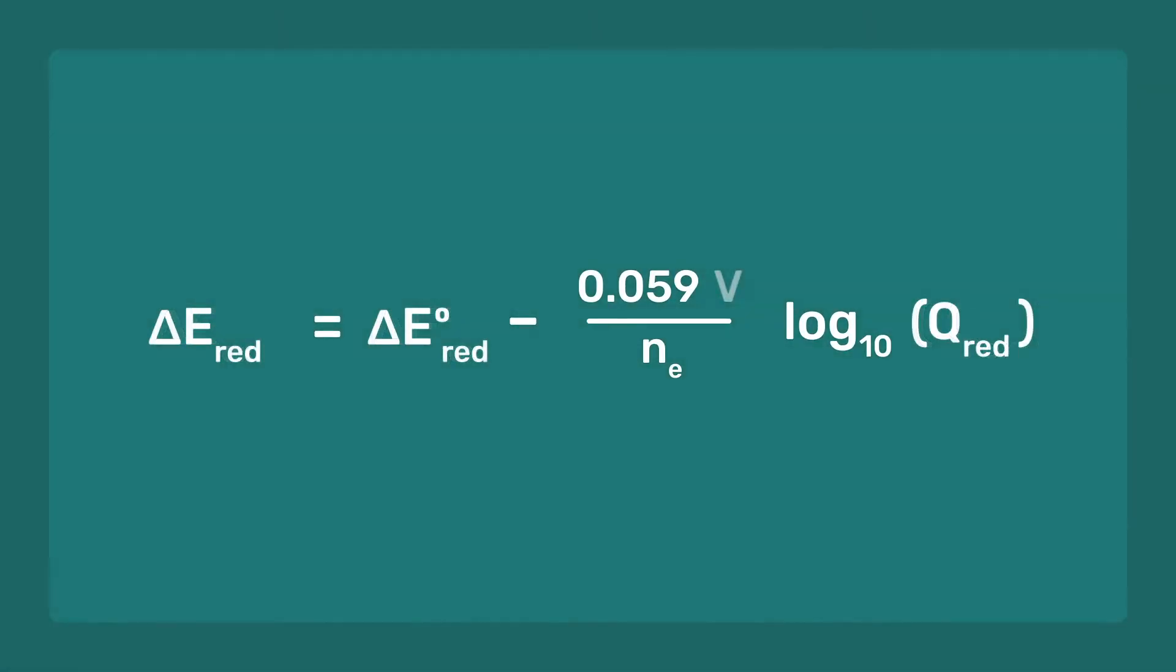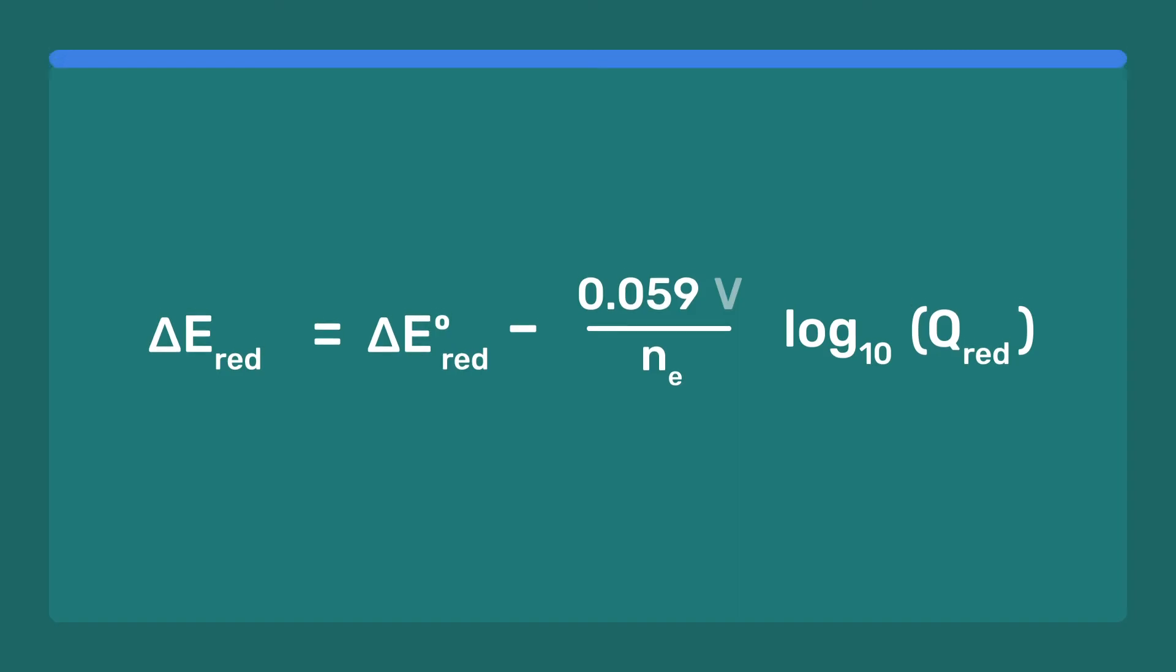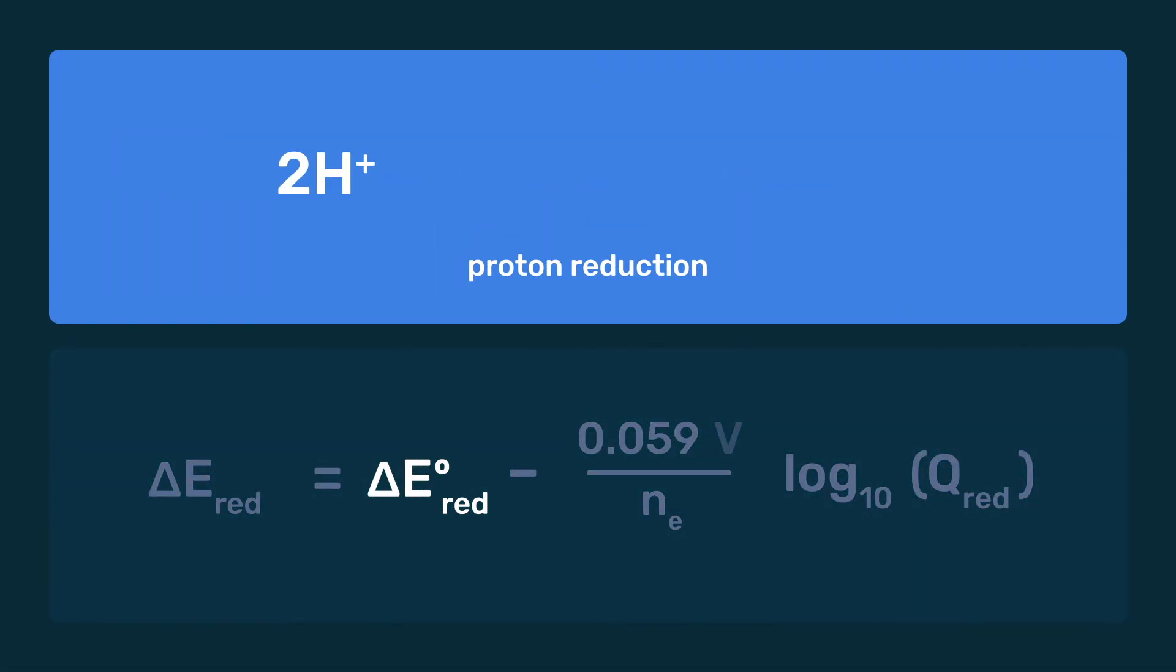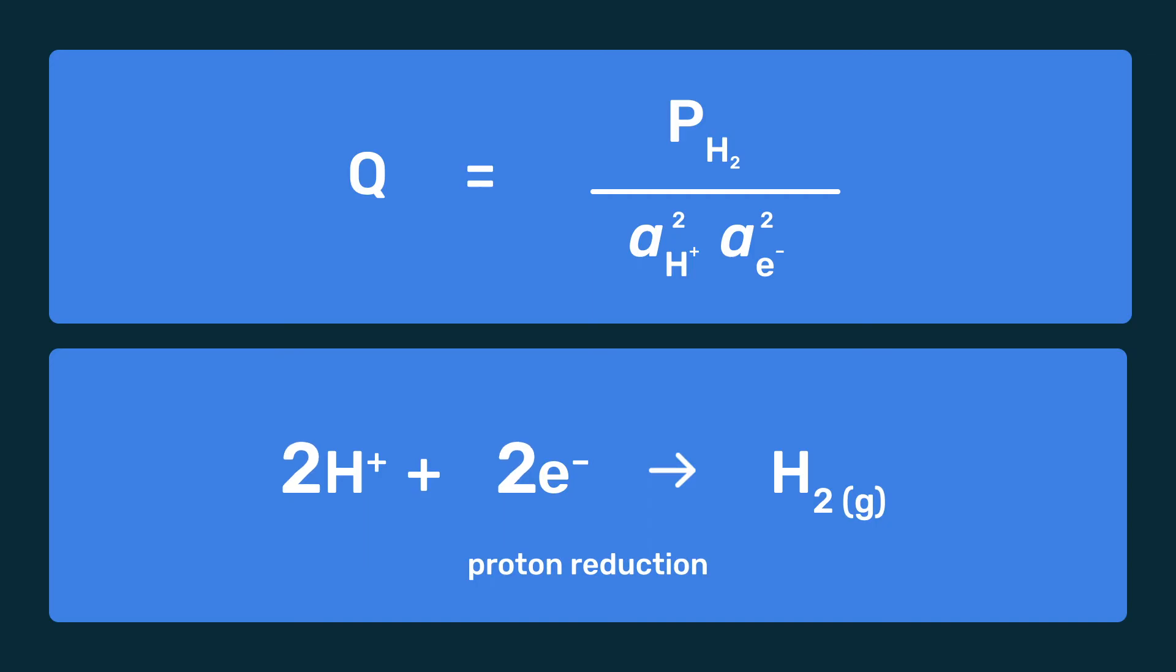The reference reaction for the potential scale is the proton reduction, which is 2H⁺ + 2e⁻ → H₂. The number of electrons involved is two, and Q is the ratio between the partial pressure of hydrogen and the product of the proton and electron activities, each to the power of two, because of the reaction stoichiometry.